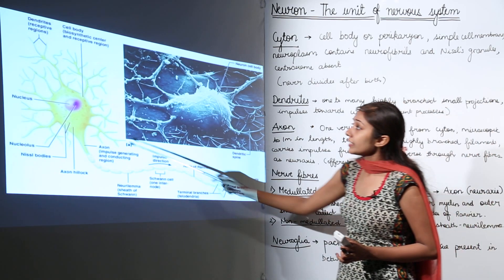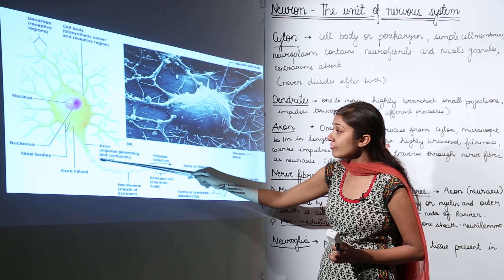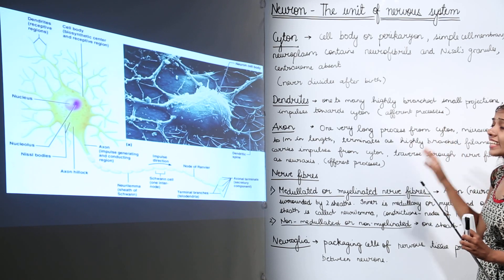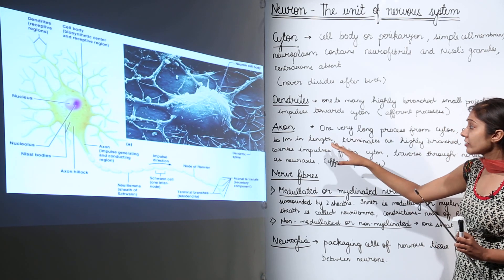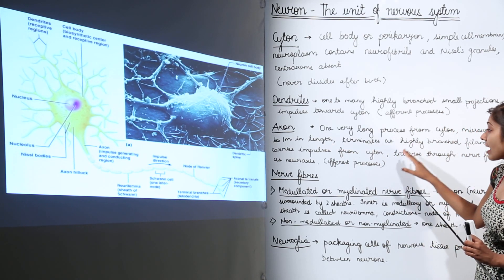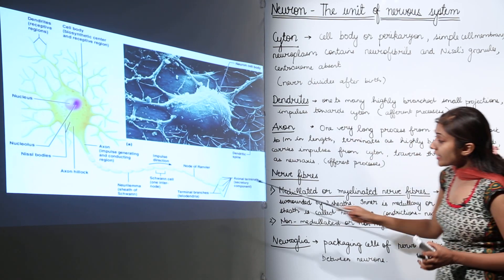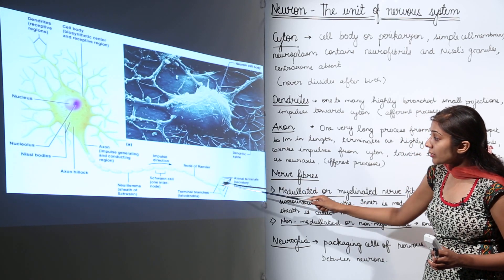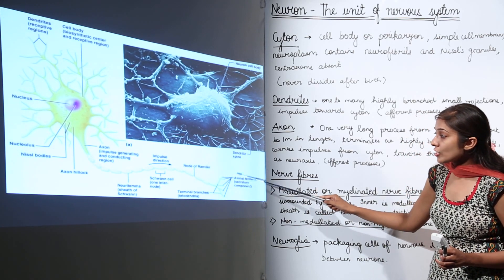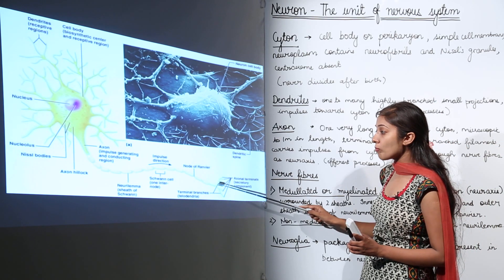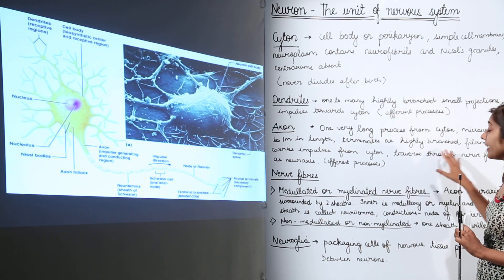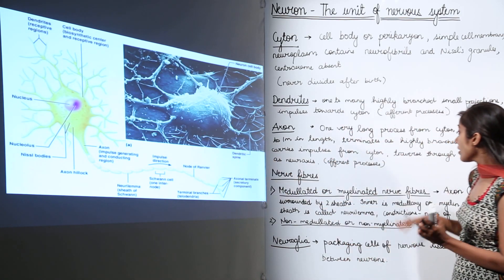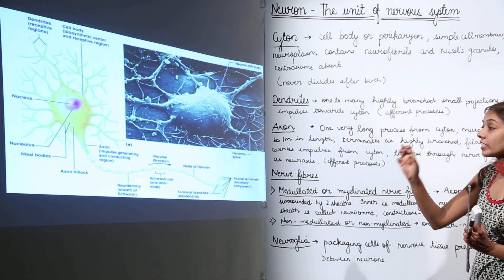The axon is one very long process from the cytone. It can range from microscopic to one meter in length and terminates as highly branched filaments — terminal branches. The axon carries impulses from the cytone to the next neuron.